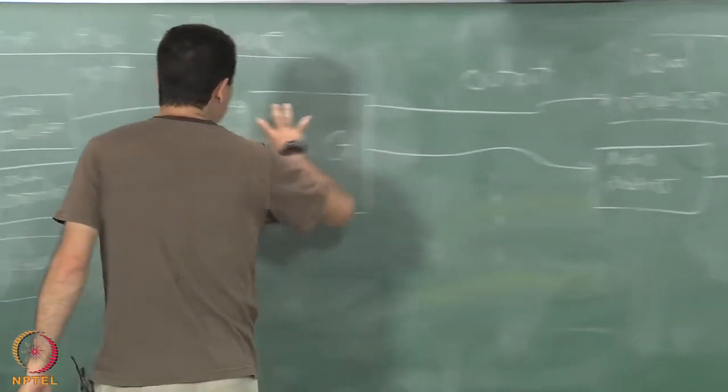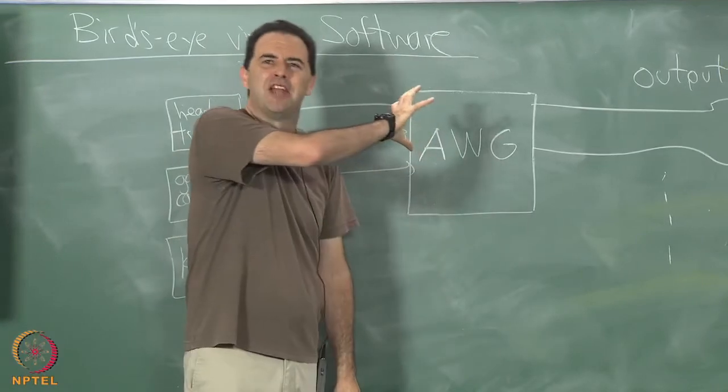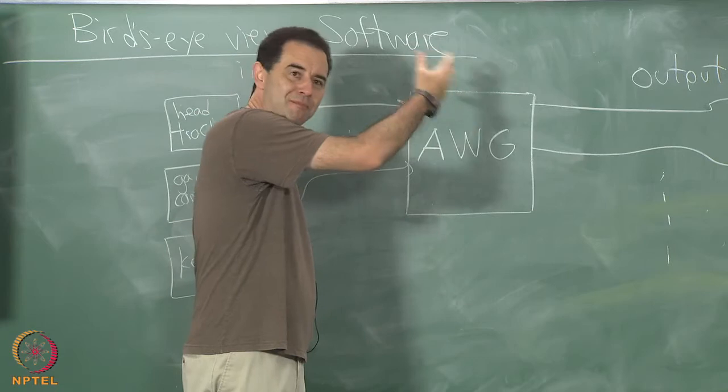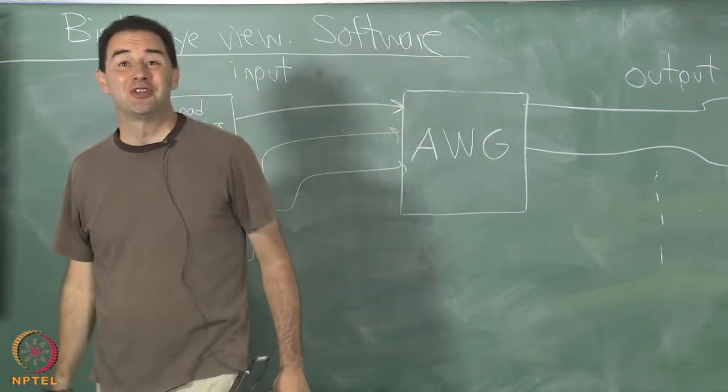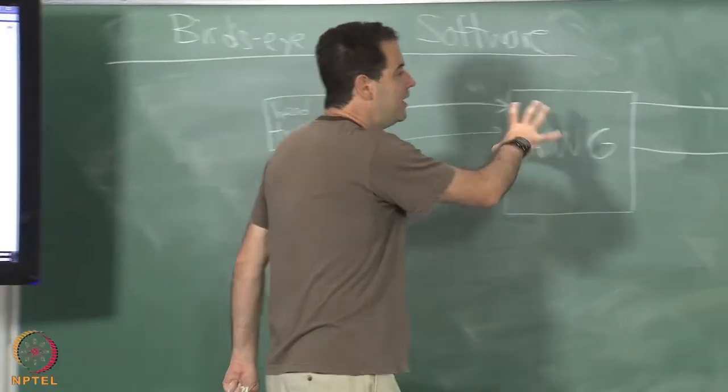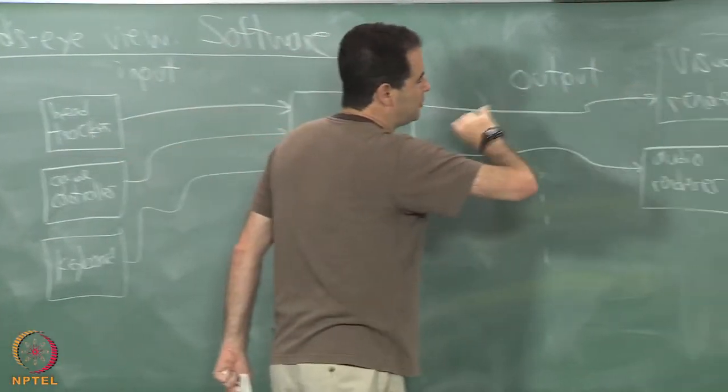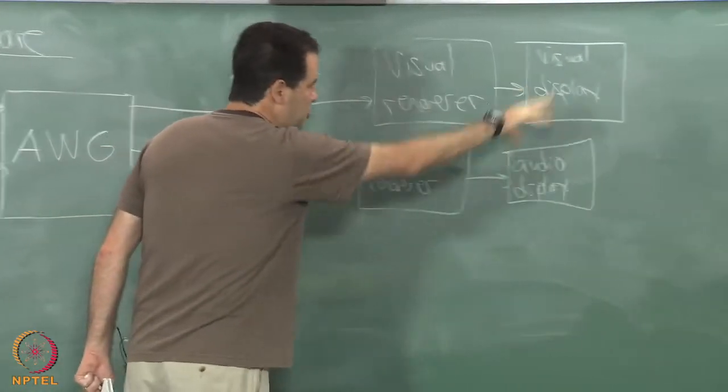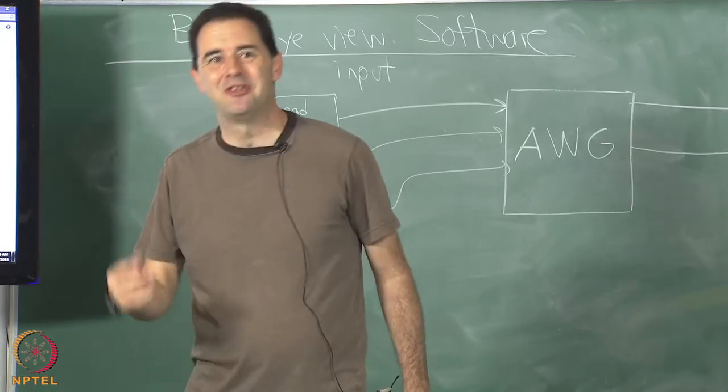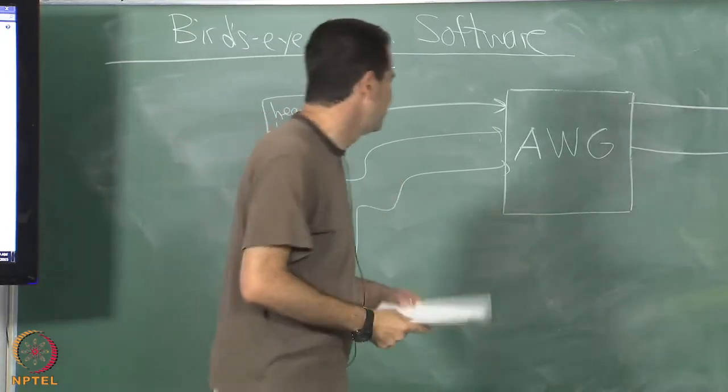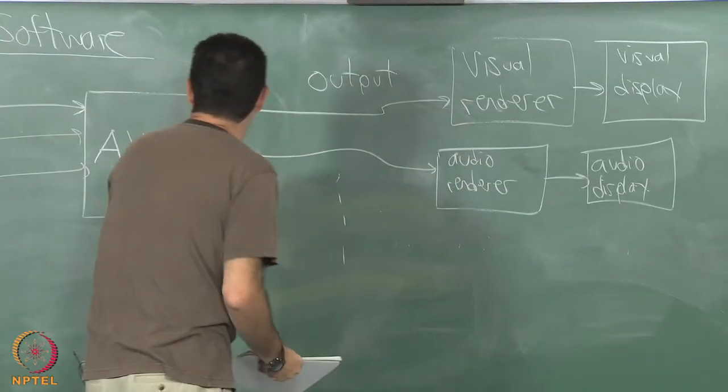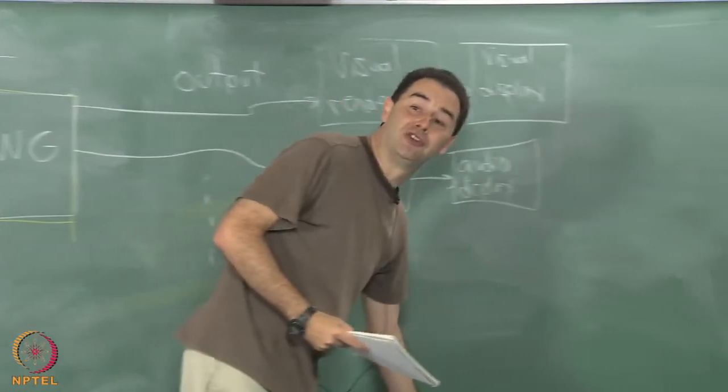The job of the alternate world generator is to maintain this kind of fictitious or remote or recorded - whatever kind of world it is - it has to maintain a lot of the physics of that world, a lot of the geometry and physics of that world in such a way that you can output to these renderers, which then output to the displays, which then output to your sense organs, which then fool your brain. That's the idea. We have to figure out what goes into this alternate world generator - that's the main part of the software challenge here.